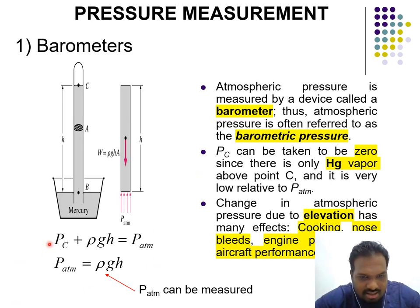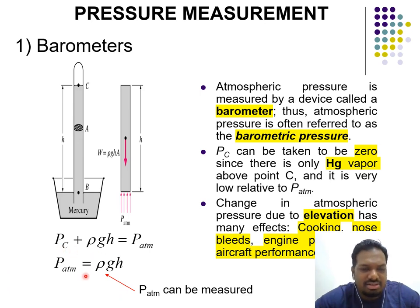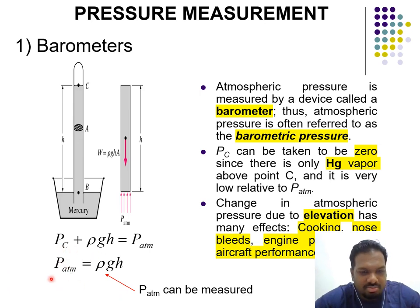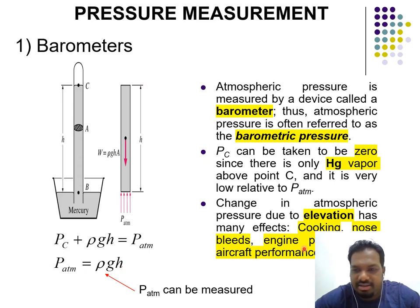Here are the formulas we can use to measure atmospheric pressure. P_atm equals rho times g times h, where h is the height.